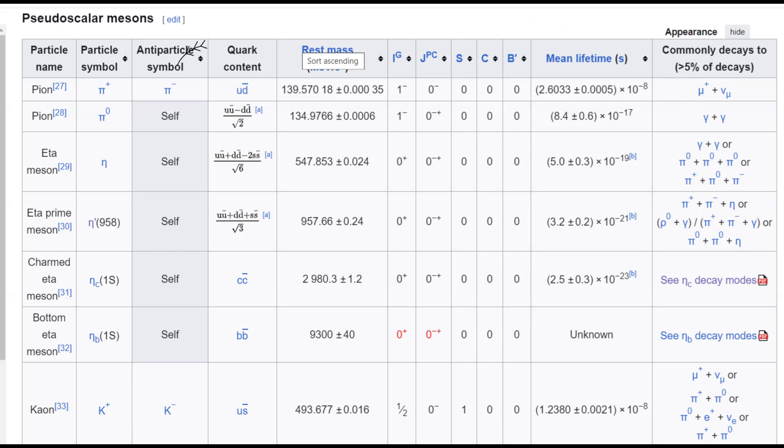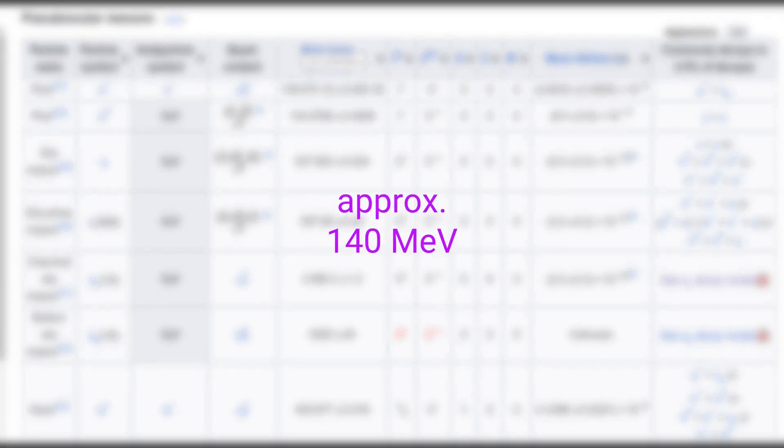The negative pion, pi minus, is the anti-particle of this positively charged pion and it has the quark content u bar d. And both of them has a mass of about 140 MeV and their main decay is into an antimuon and a muon neutrino.